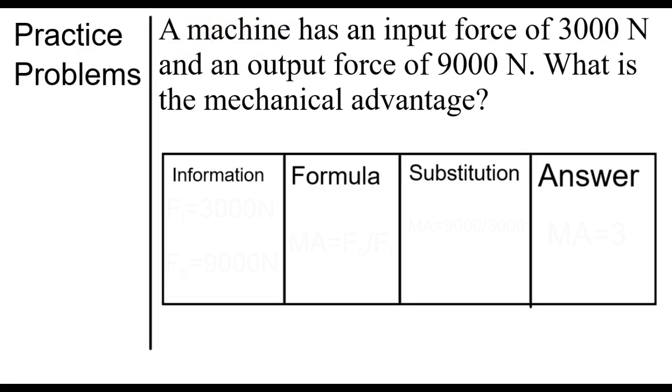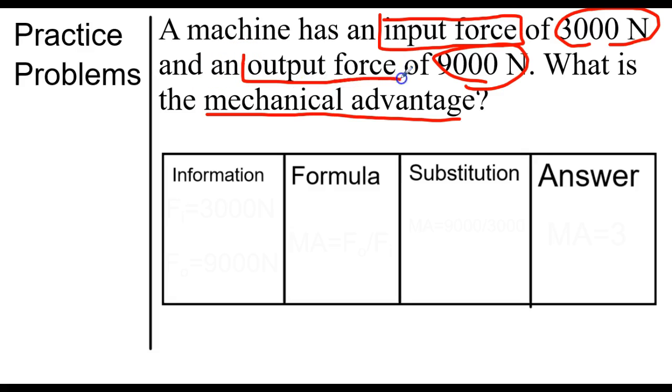Let's take a look at a couple of practice problems. A machine has an input force of 3,000 newtons and an output force of 9,000 newtons. What is the mechanical advantage? If we annotate this, we have two numbers: 3,000 and 9,000. When I'm putting my boxes around here, I'm going to box input force and output force.